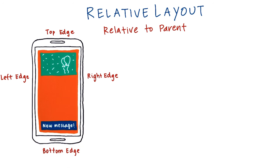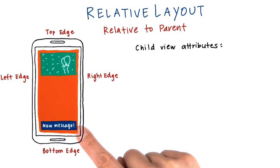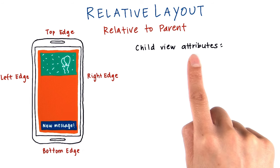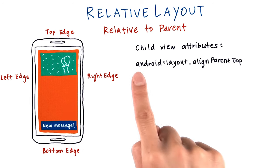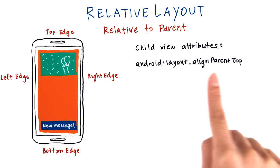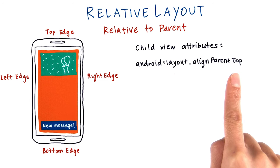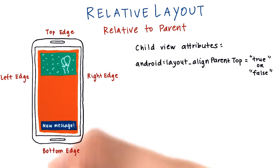This is the code for it. On the child view XML elements — for example, for the image view or text view — you would add these attributes. The attribute name follows this format: android:layout_alignParentTop. This attribute determines whether the child view is aligned to the parent's top edge or not, so the possible values are true or false. If it's true, then the view should be aligned to the parent's top edge. If it's false, then it shouldn't be aligned.